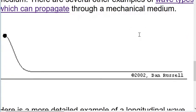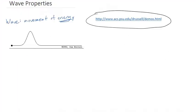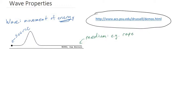I'll scroll down to another example — this could be a rope having a wave put through it. A few terms to start off with: the thing that actually does the making of the wave we call the source. The source is what initiates the motion of the wave — it's what causes the wave. Another important term is the medium, which is what the wave is traveling through — through a rope, or a spring, or something like that. The source starts oscillating the medium, and then the wave travels through the medium.